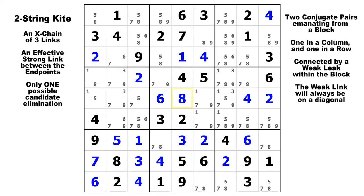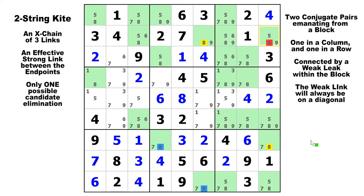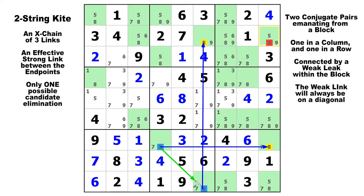Let's take a look at candidate eight. We've got a strong link from here to here, and another strong link from here to here. Both strong links are coming out of block eight and lead to the two yellow eights — the endpoints. The elimination candidate is in row two, column nine, because that eight can see both yellow endpoints and can be eliminated. It's a real true-looking two-string kite with a classic kite shape — head up there and tail down here.